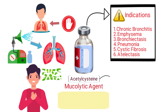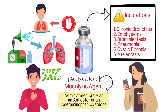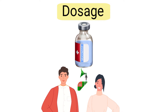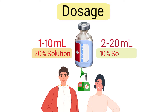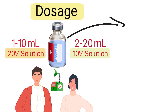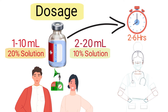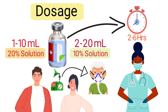Acetylcysteine can also be administered orally as an antidote for an acetaminophen overdose, but more on that later. The standard dose of Mucomist for adults when administered via nebulization is 1 to 10 milliliters of the 20% solution, or 2 to 20 milliliters of the 10% solution. It can be administered every 2 to 6 hours and is typically performed by a respiratory therapist.